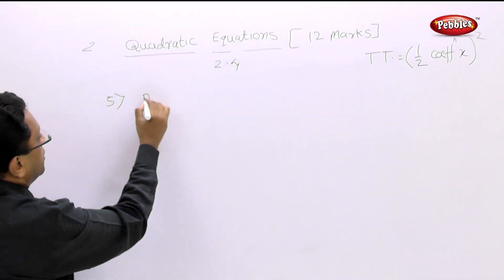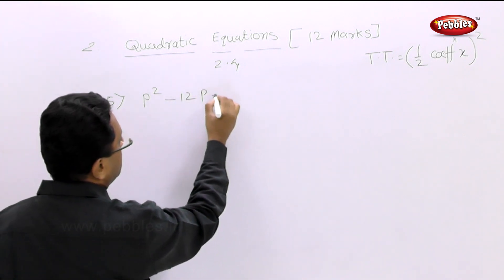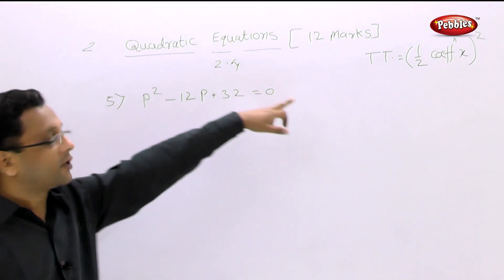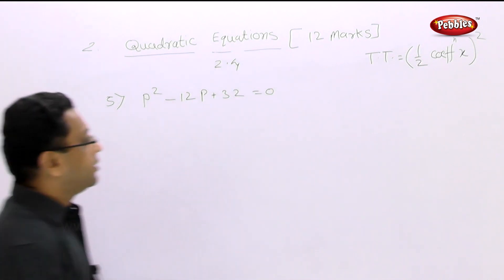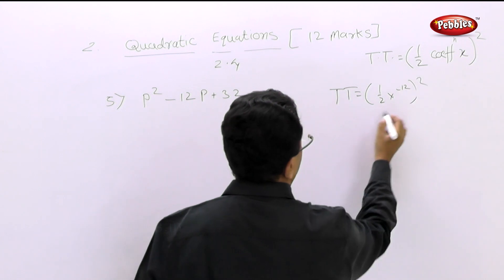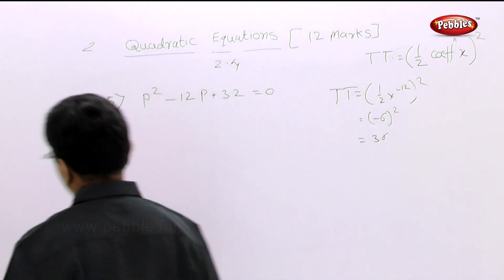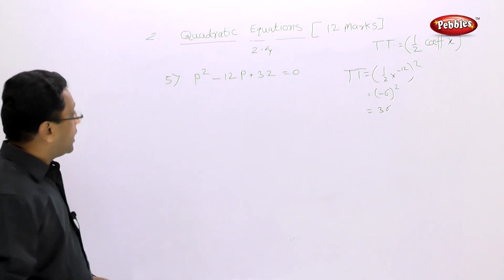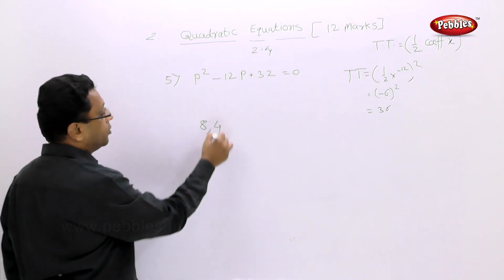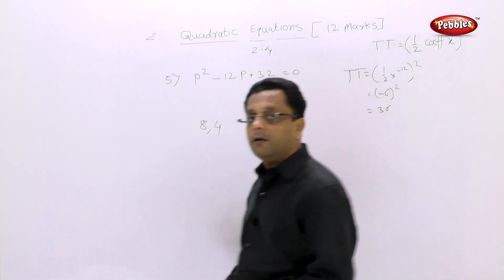Fifth example: p² - 12p + 32 = 0. Check that p² is alone — yes. Transfer 32 to the right side — it becomes minus 32. The third term is half of (minus 12) squared = 36. Add 36 to both sides. The roots are p = 8 or p = 4. Finish this example and check your answer.